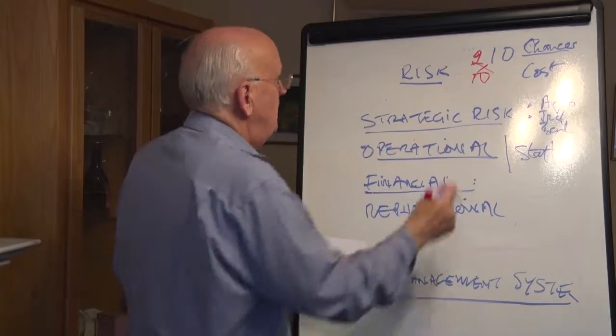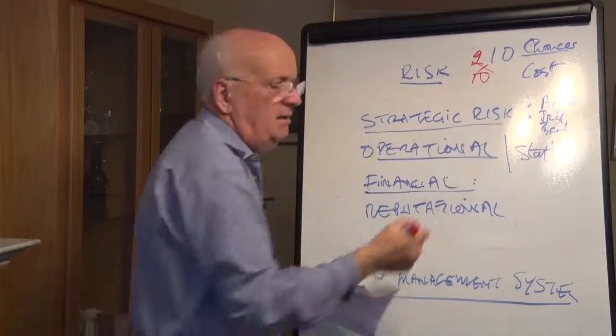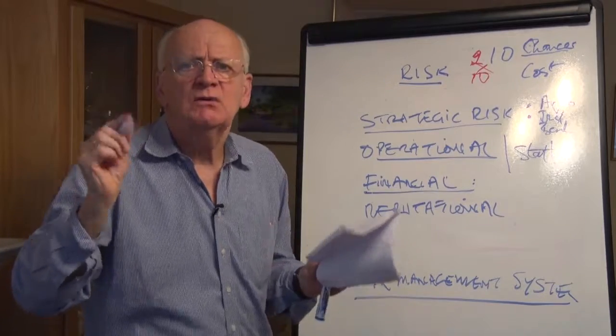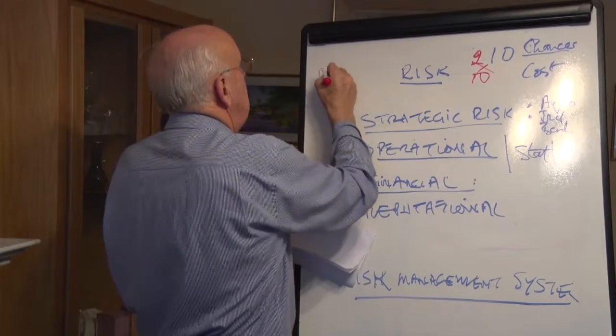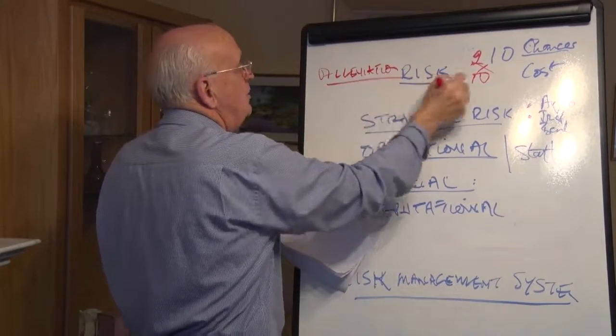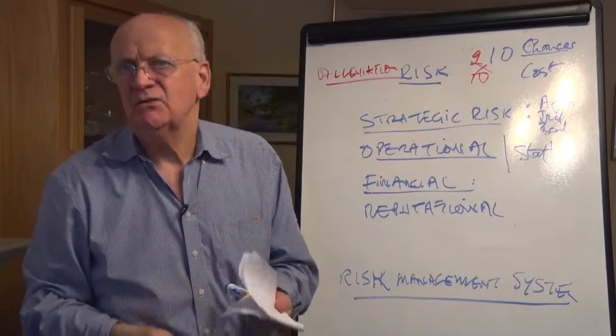It could be, you know, 1 and 10. So what you do is you assess the risk, and then you put in what's called risk alleviation. And that's risk management. So you say, if that's a risk, what are we going to do to minimize that risk?